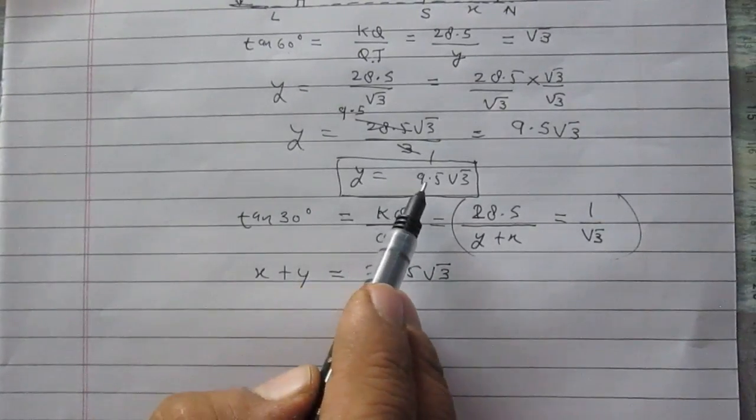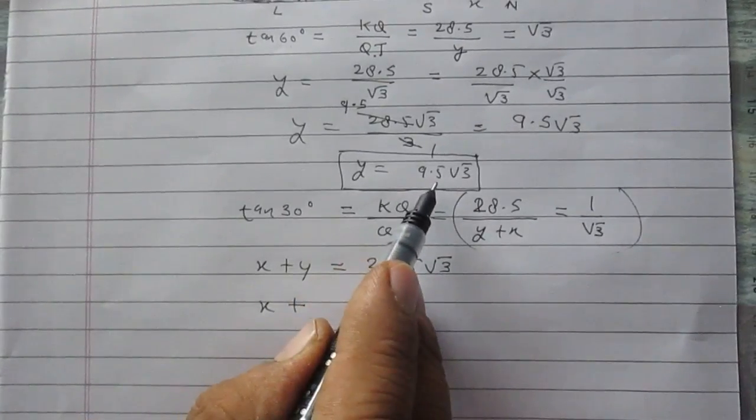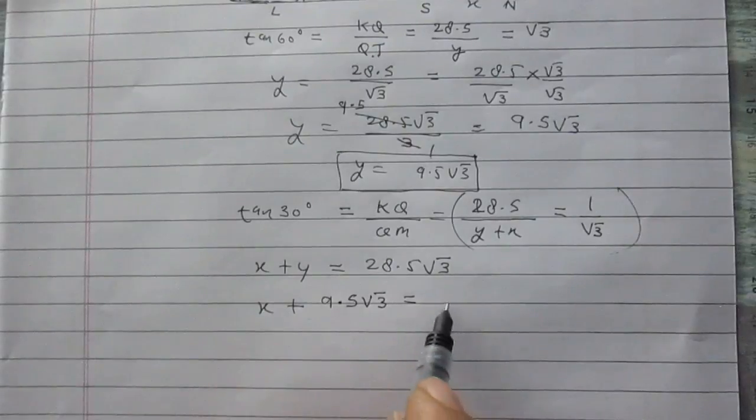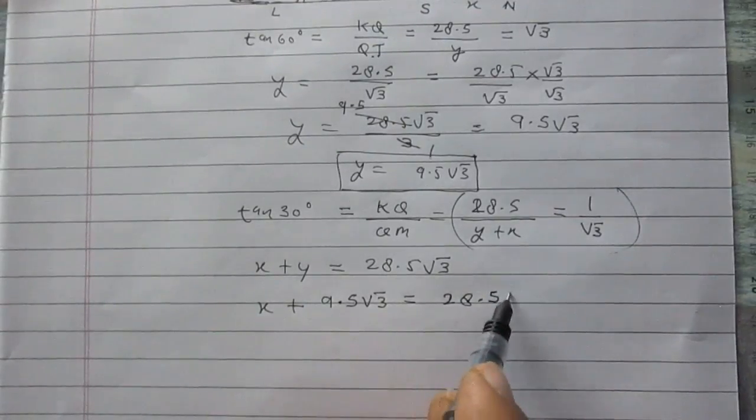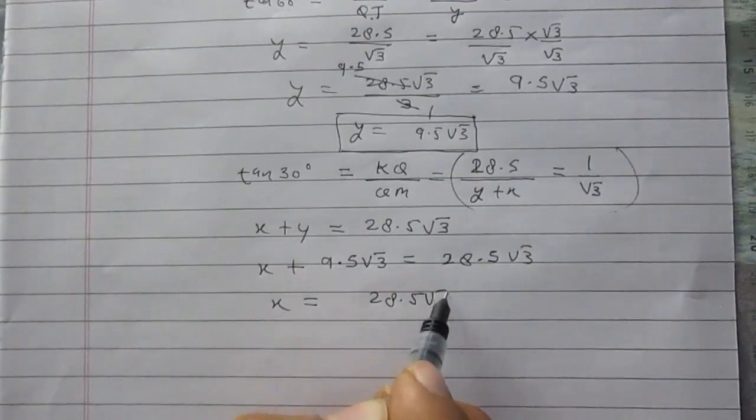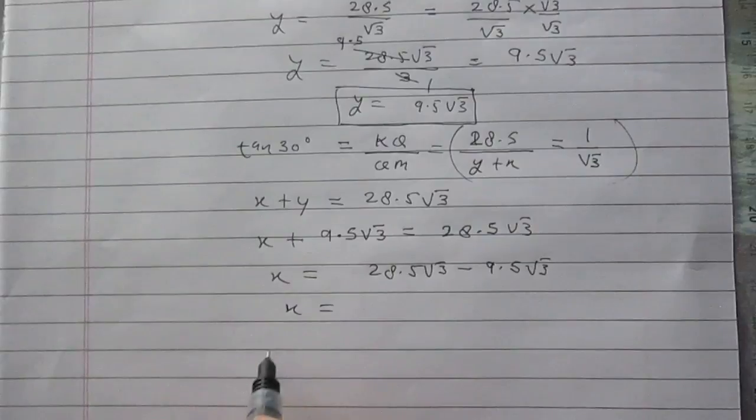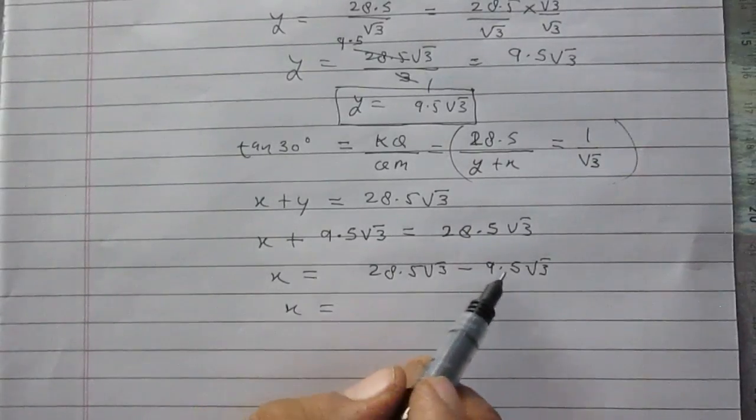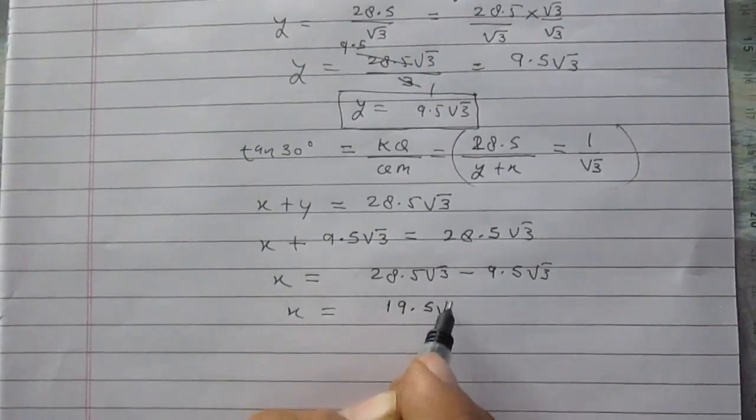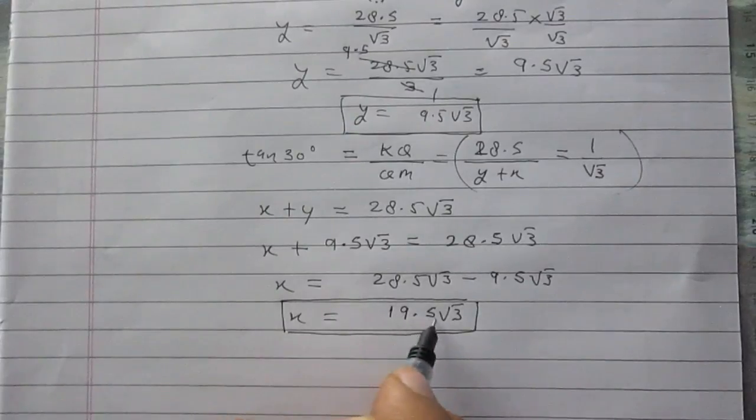We know that Y is 9.5 root 3, so we will substitute the value of Y, 9.5 root 3 here. So Y is 9.5 root 3, now X is equal to 28.5 root 3 minus 9.5 root 3. It is just like 28.5R minus 9.5R. So it is 19 root 3. So X is 19 root 3.